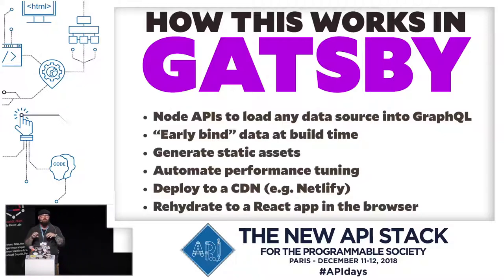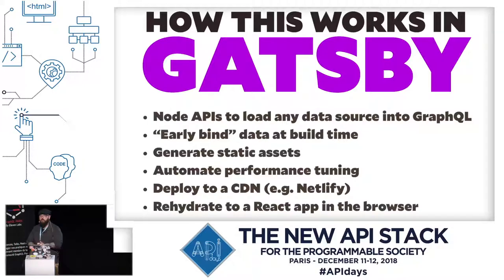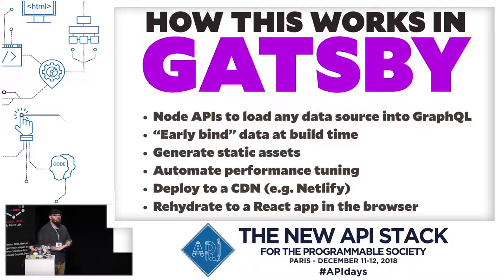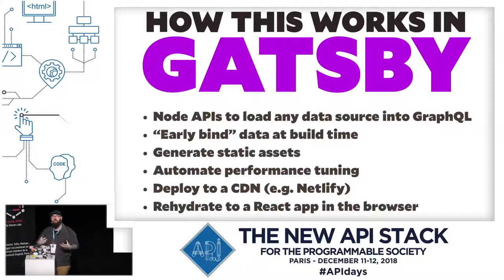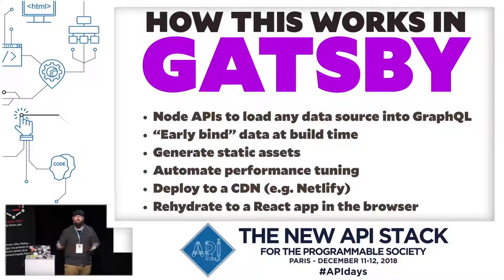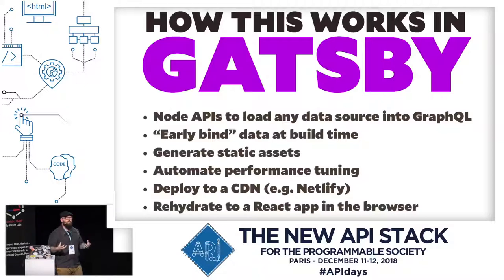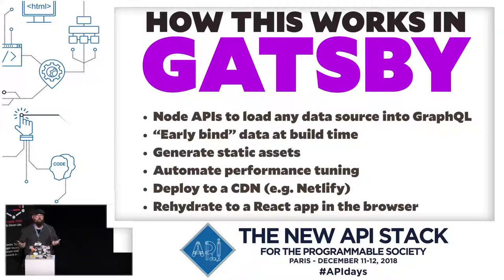We automate performance tuning in Gatsby. When you build, we manage bundle splitting, inline render critical assets, optimize your images, eliminate asynchronous calls that would slow you down at runtime, and much more — so you don't have to think about it. If you take our default starter and run it through Lighthouse or webpagetest.org, you'll get straight A's and 100 out of 100 on performance by default. You're set up with the best possible solution and just have to keep it there, then deploy to a CDN.